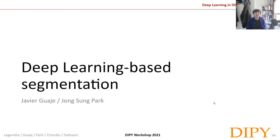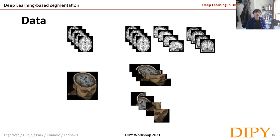Deep learning is widely used in segmentation. For example, in computer vision, object detection is a good case. However, we can't just use the architectures used in computer vision for brain images, since brain images tend to be huge memory 3D data, and using the same architectures with that 3D data would cause your memory systems to explode.